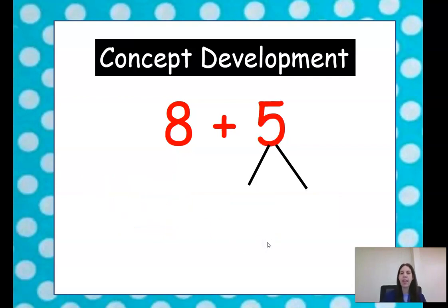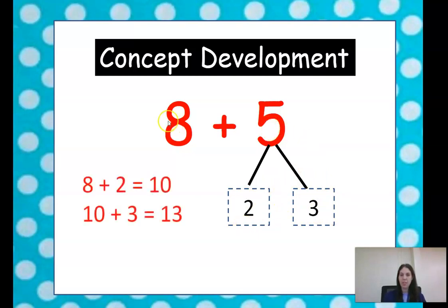What about this one? 8 plus 5. We can break our 5. We're going to do our 2 because 8 plus 2 equals 10. And then how many do we have here? We have 3 left, right? So there's 3 because 3 and 2 equals 5. So if 8 plus 2 equals 10, and then 10 plus this 3 here equals 13. So 8 plus 5 equals 13.